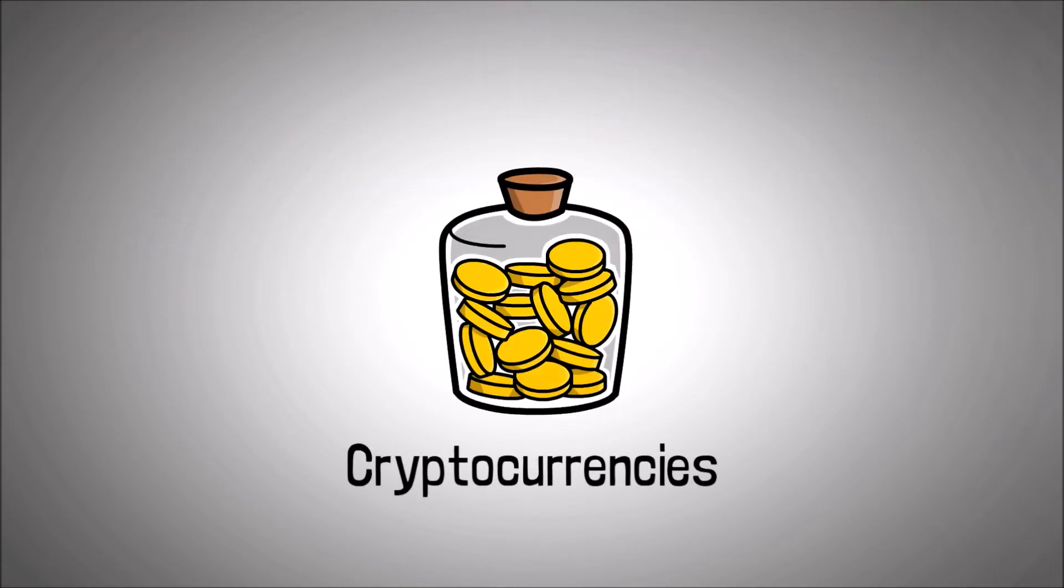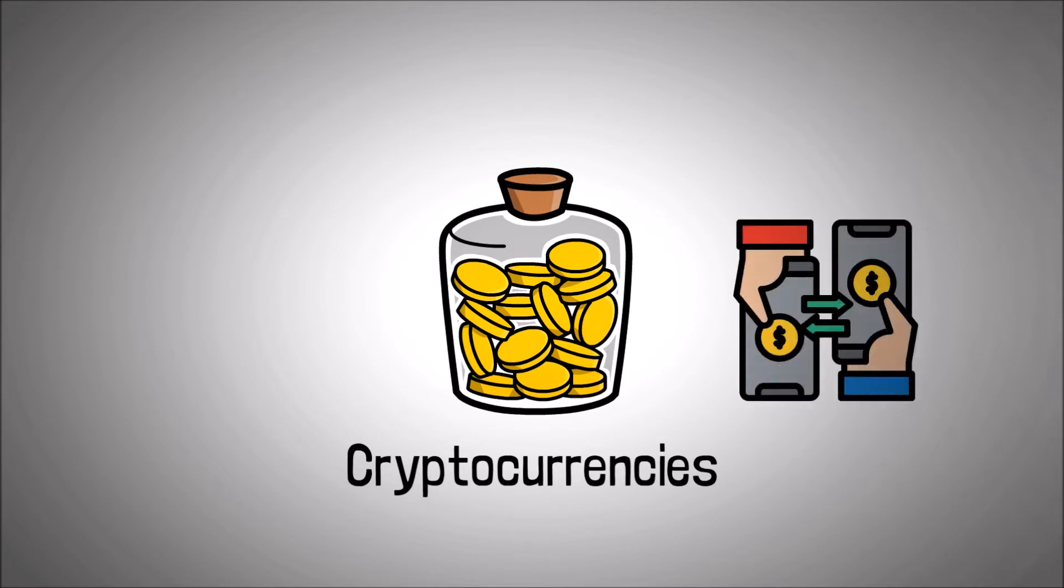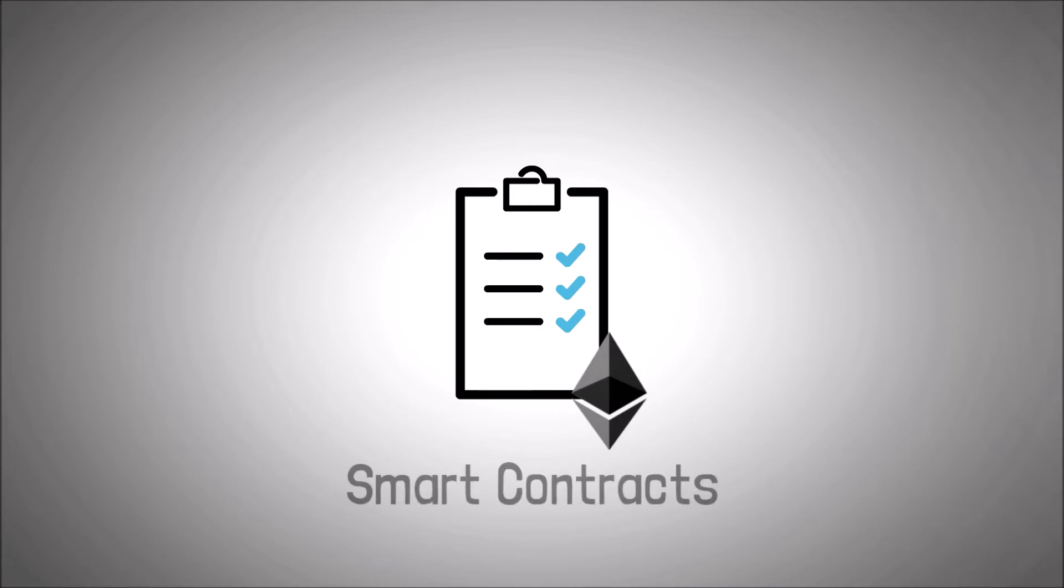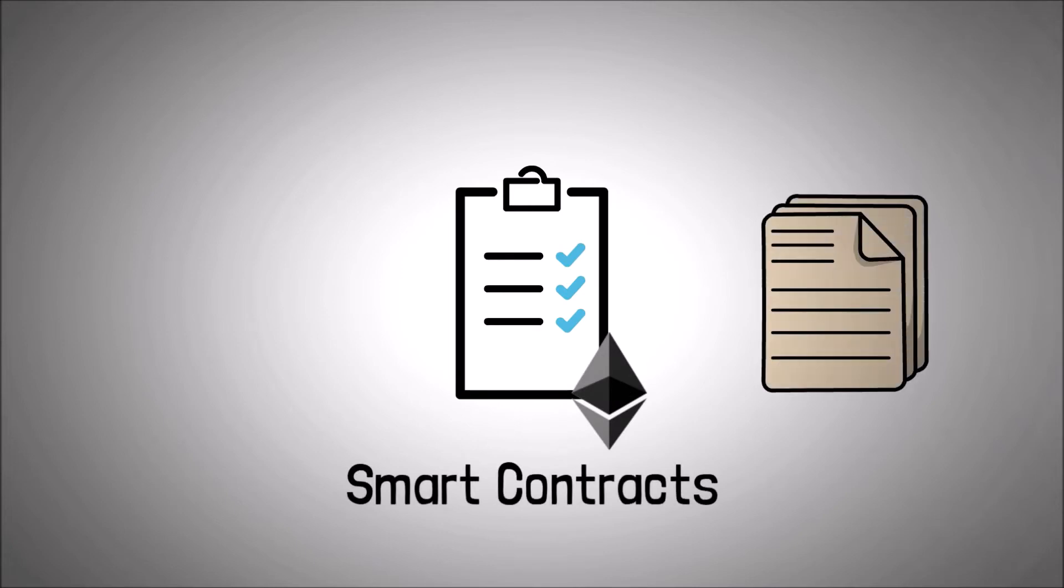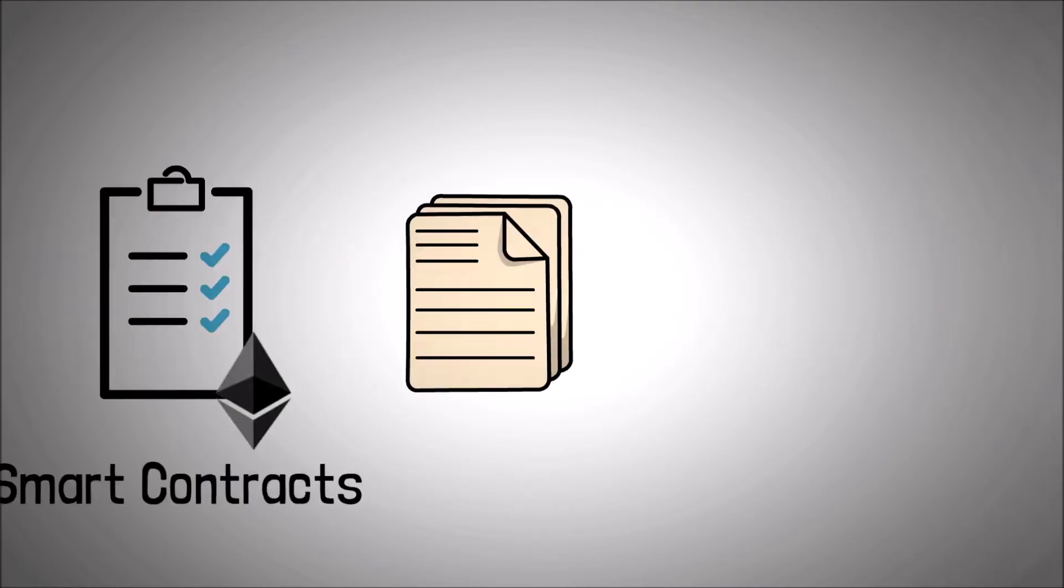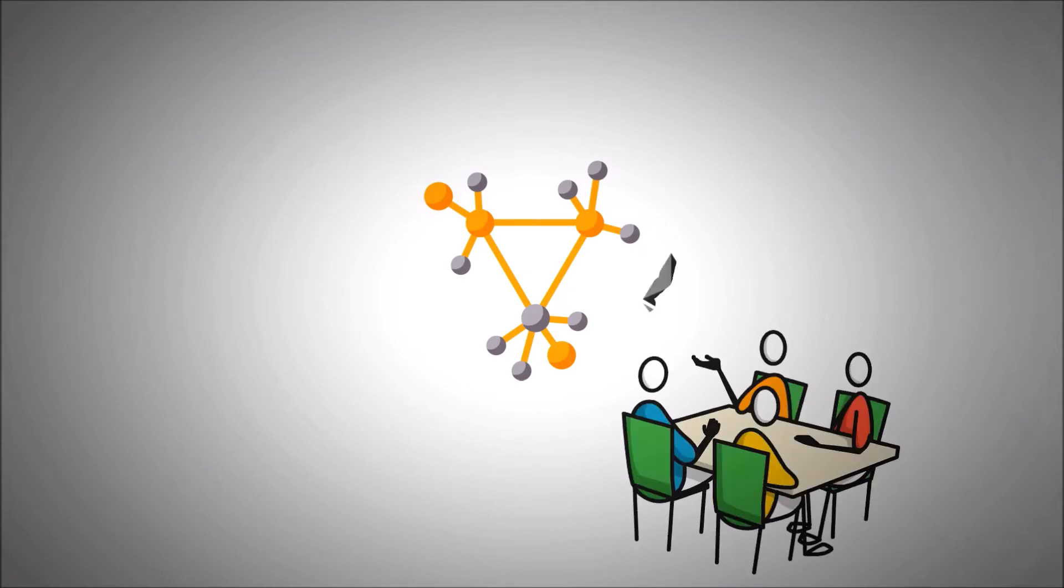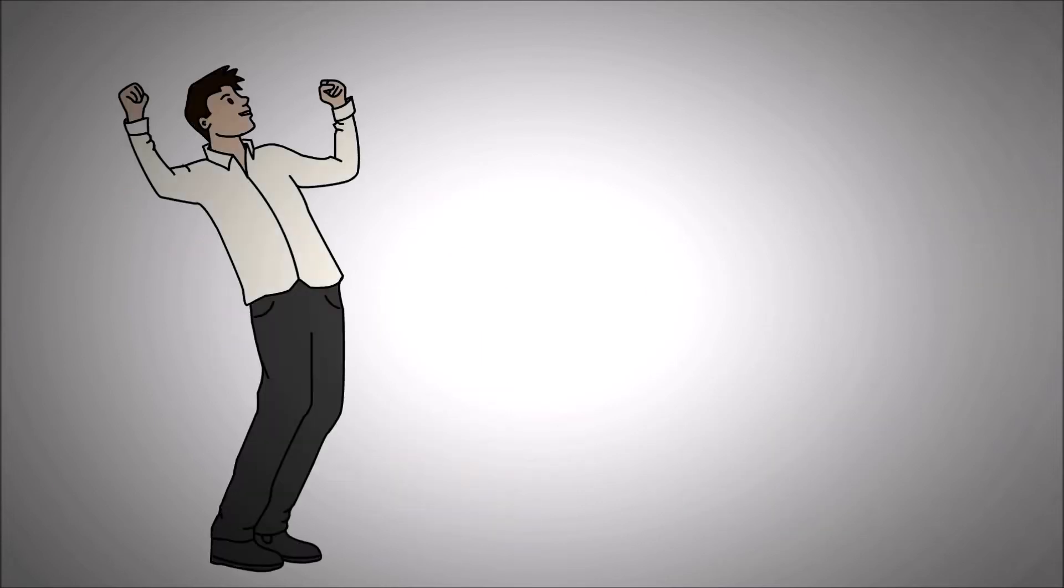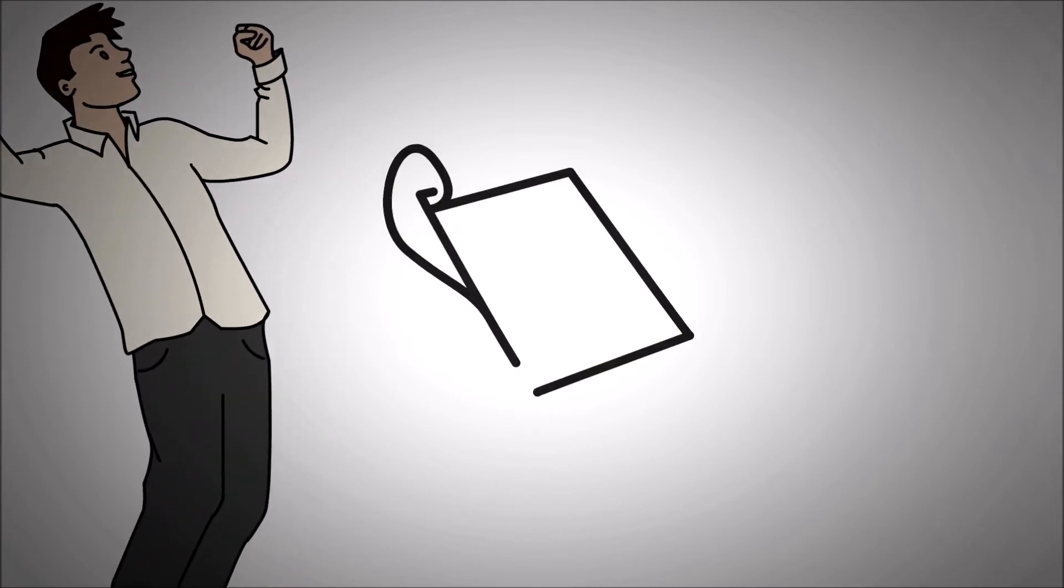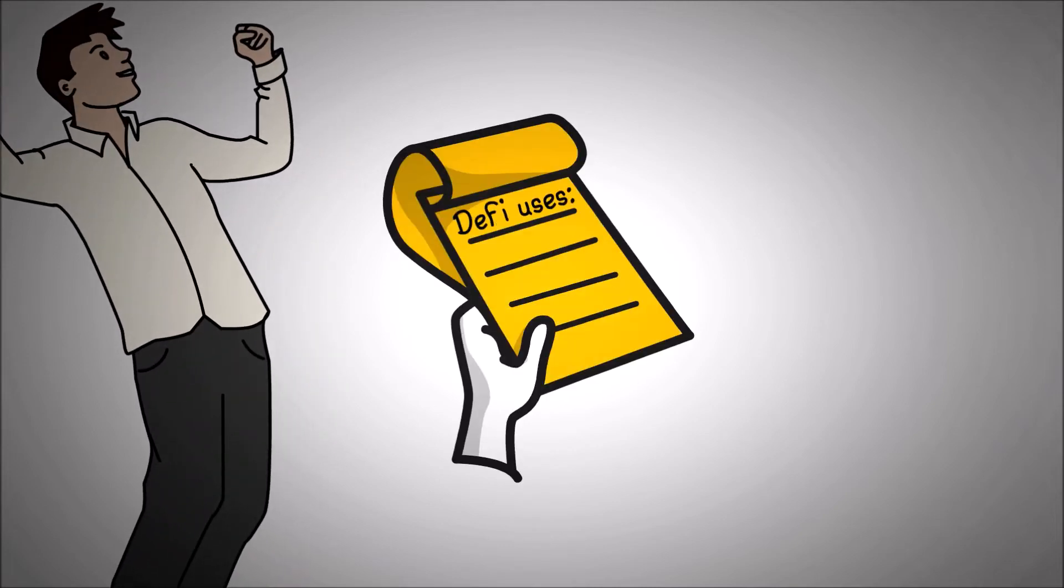There's cryptocurrencies. Ether and the other tokens or currencies are used to enable transactions in DeFi. There's smart contracts. The lines of code written in a programming language are used to program how cryptocurrencies will behave. And then there are DeFi projects. The projects are created by developers on the Ethereum network using cryptocurrencies and smart contracts. So now that we understand what DeFi is and how it works, let's look at the four most important use cases offered by DeFi.